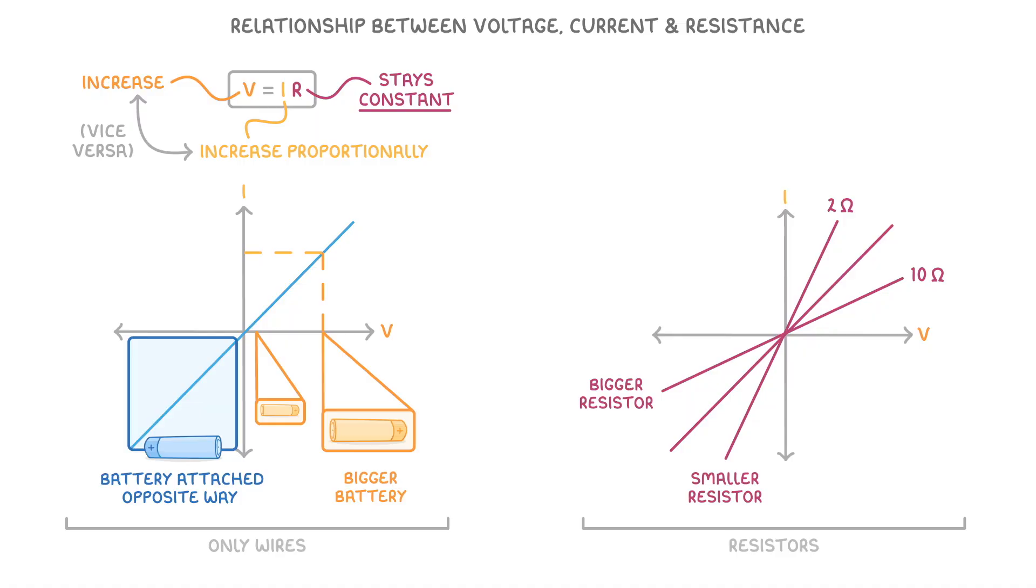You can think of this in terms of how much potential difference is required to produce a given current. If the circuit contains a smaller resistor, and so less overall resistance, then we only need a small potential difference to drive a large current.